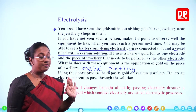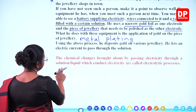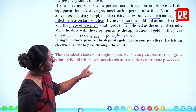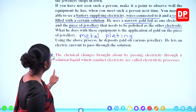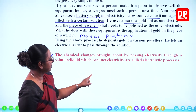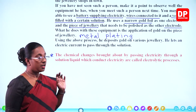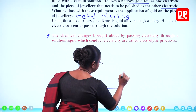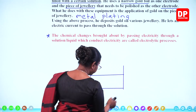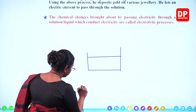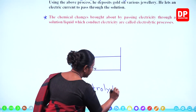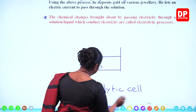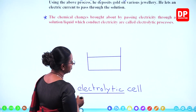The chemical changes brought about by passing electricity through a solution or liquid which conduct electricity are called electrolytic processes. We will call this an electrolytic cell because the process is electrolysis. So the cell is known as an electrolytic cell.